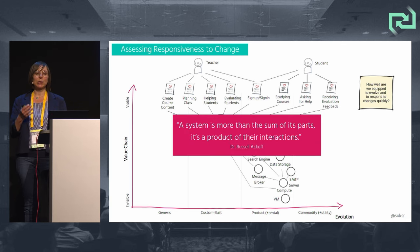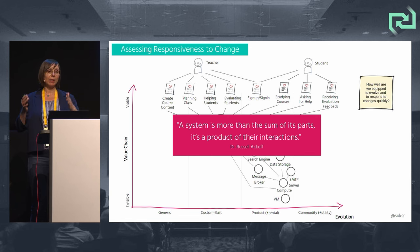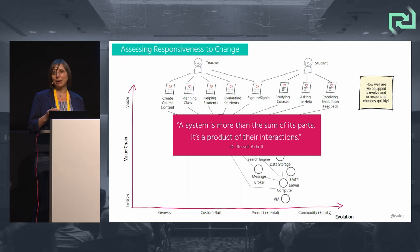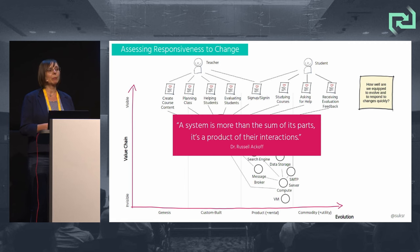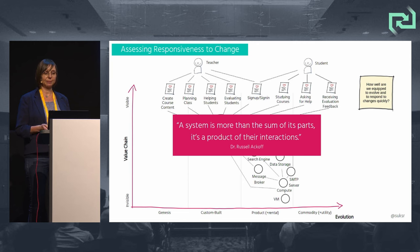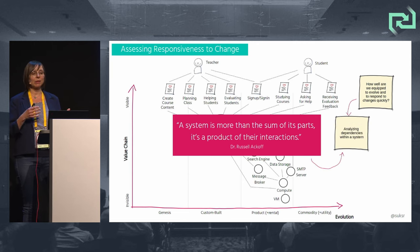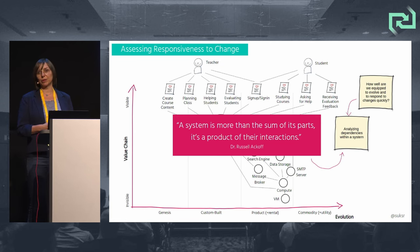That requires looking at our system as a whole rather than at isolated parts. Dr. Russell Ackoff, one of the pioneers of the systems thinking movement, stated that a system is more than the sum of its parts — it's a product of their interactions. The way parts fit together determines the performance of a system, not how they perform taken separately. That reminds us to analyze our system and the dependencies between parts to assess our responsiveness to change.